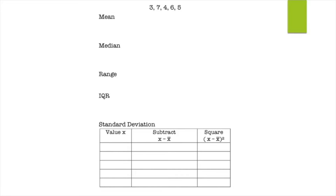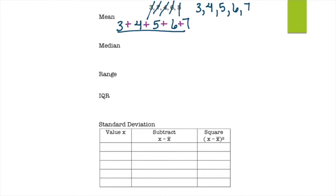For the next data set — 3, 7, 4, 6, 5 — first put it in order from least to greatest: 3, 4, 5, 6, 7. Check all five numbers are included. To find the mean, add all the numbers together: 3 + 4 + 5 + 6 + 7 = 25, divided by 5, which equals 5.